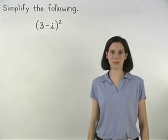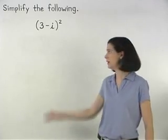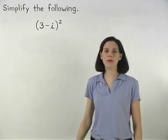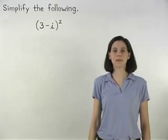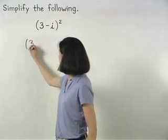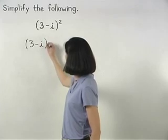In this example, we're asked to simplify 3 minus i squared. Remember that 3 minus i squared can be thought of as 3 minus i times 3 minus i.